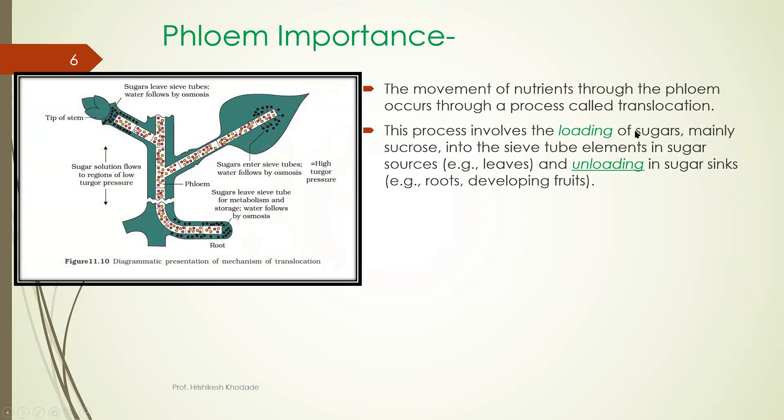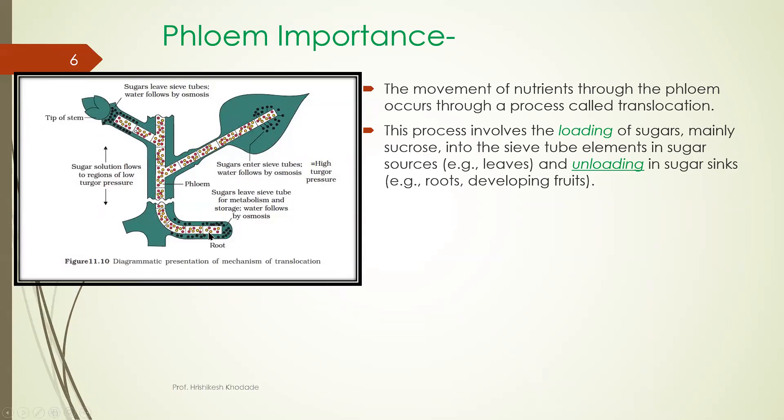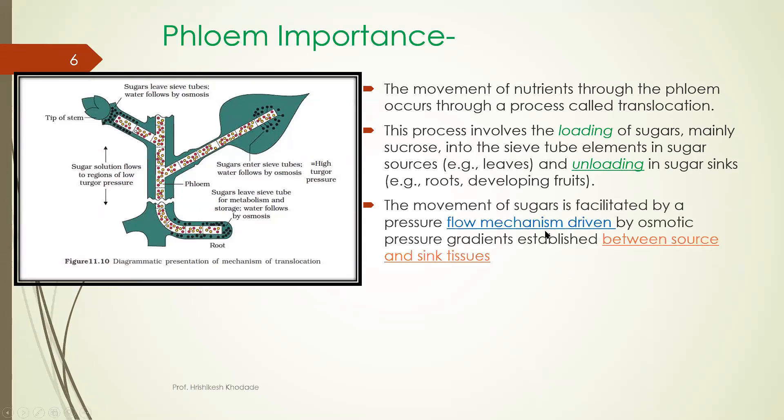This process involves loading of sugar. Loading means the leaf loads the sugar into the sieve tube element and unloading of sugar from this sieve tube element. From leaf to sieve tube element loading and from sieve tube element to the area where food material are required it is unloading.